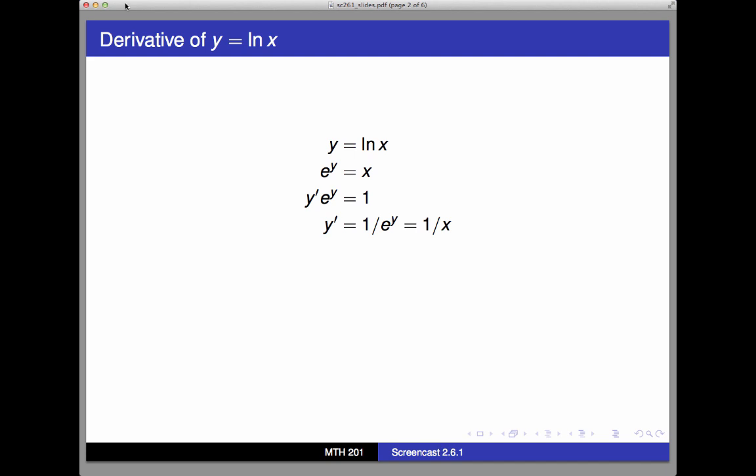That means that if y is equal to ln of x, then e to the y is equal to x. This is actually the definition of the natural logarithm, and this dual relationship between the exponential and logarithmic function is essential for working with either one. Anyway, since e to the y equals x, we can differentiate both sides with respect to x to get y prime times e to the y equals 1. And so solving, we get y prime equals 1 over e to the y.